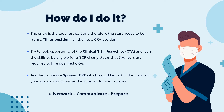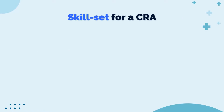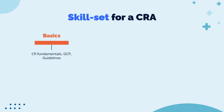Now let's look at the necessary skill set for a CRA. The first and foremost skill set is the basics—make sure you understand all clinical research concepts and fundamentals. Know your GCP: ICH E6 R1, the current amendment E6 R2, and the upcoming E6 R3. Make sure you understand the regulatory guidelines for the region you are working in. These basics must be rock solid before moving on to anything else.